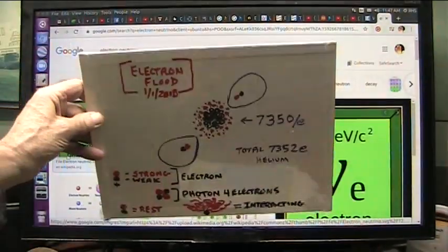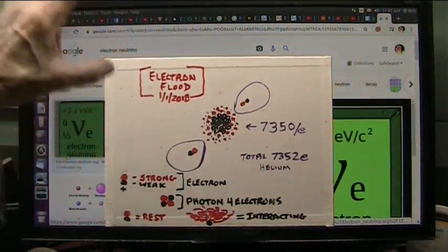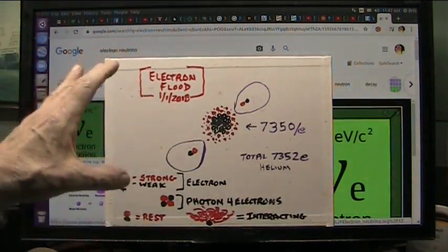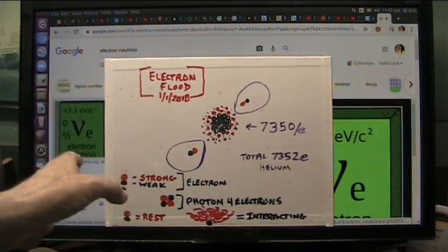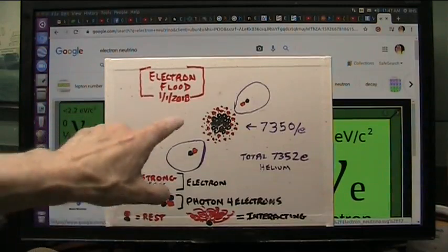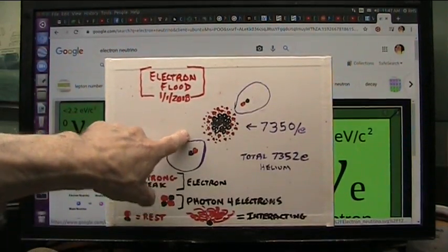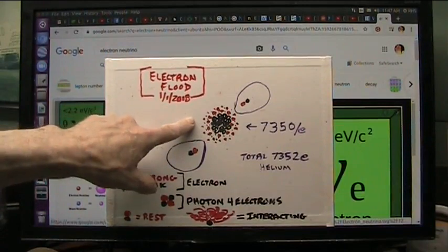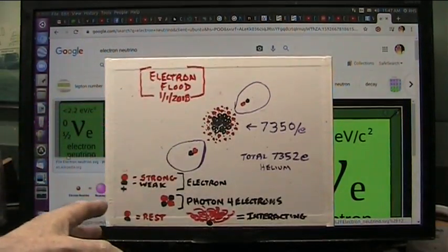I know CERN is probably very jealous because we did this with a smaller budget, somewhat smaller, and we understand now that the nucleus is nothing but electrons, and there is nothing but electrons, and that is called Electron Flood Theory.